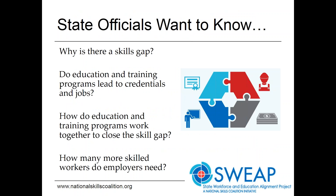State officials have some basic questions they want answers to, such as: do programs lead to credentials and jobs? Do programs work together? How many more skilled workers do employers need? Too often states lack the data to answer these questions. One of SWEAP's goals is to provide better cross-program data that can answer these questions and help states adopt policies that align workforce and education programs with employer skill needs.